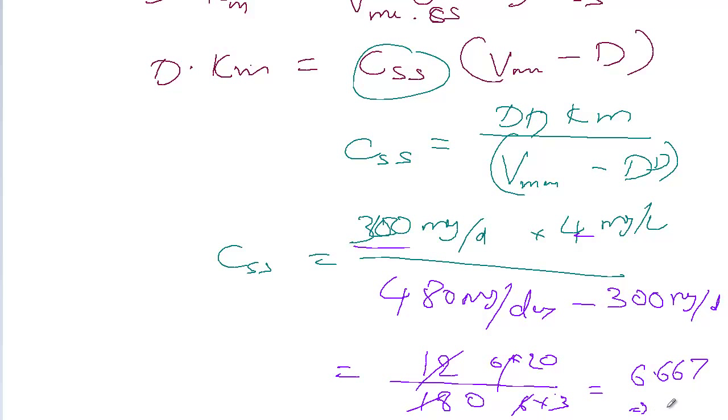You can round it up and say 7 mg per liter. So the concentration that we're going to achieve is 7 mg per liter steady state concentration for a dose of 300 mg. Alright, I'm going to stop here. Thank you.